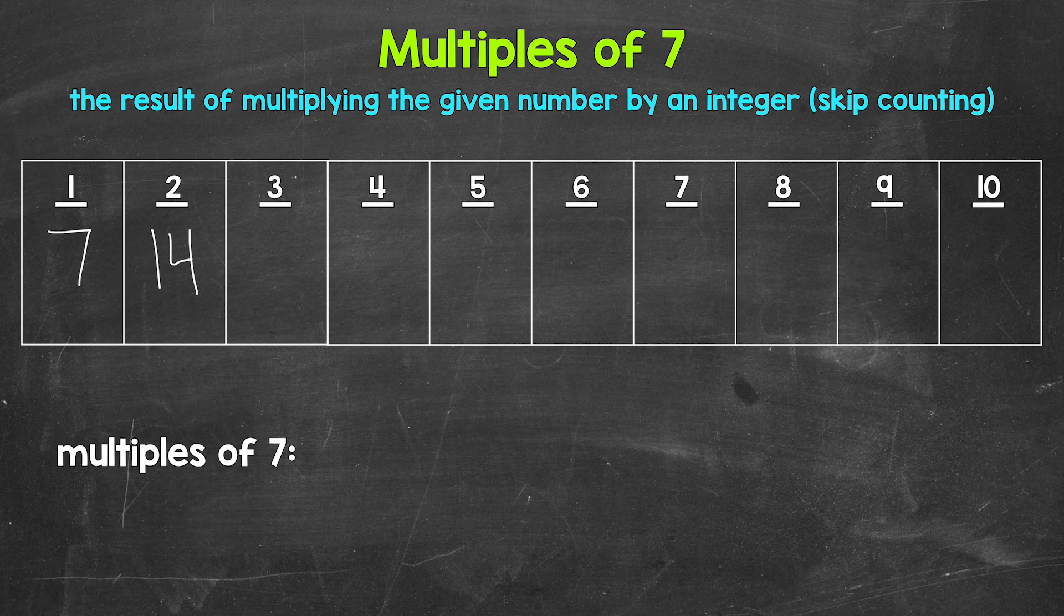Then we have three times seven, that's 21. Four times seven is 28. Five times seven is 35. Six times seven is 42. Seven times seven is 49.